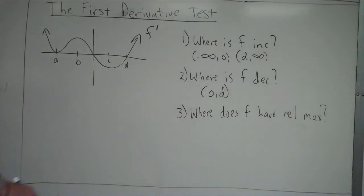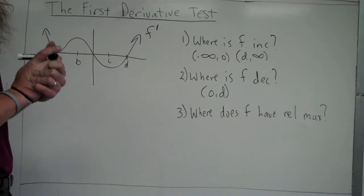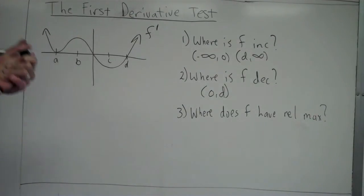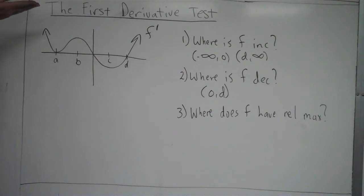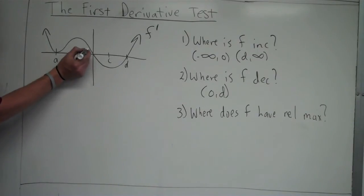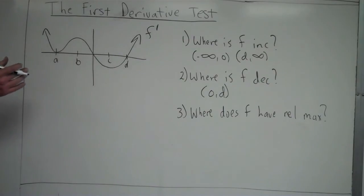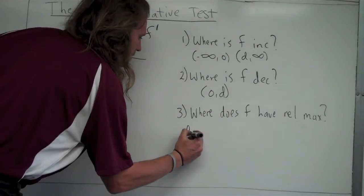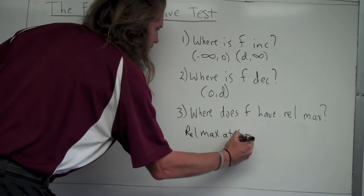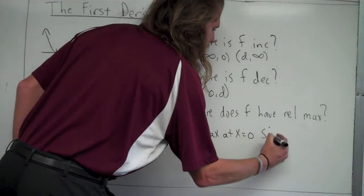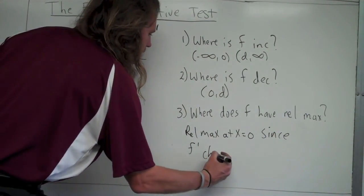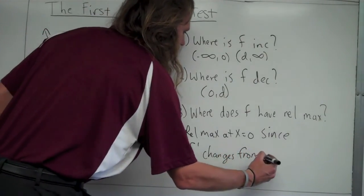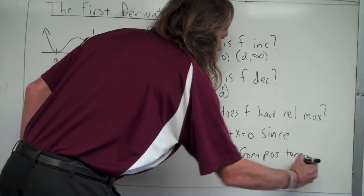Where does f have a relative max? f has a relative max when f prime changes from positive to negative. What we're looking for is any place where the graph of f prime goes from a positive y-value to a negative y-value — from above the x-axis to below the x-axis. That happens right here at zero. To the left of zero, f prime is positive; to the right of zero, f prime is negative. I'm not looking at the slopes of this graph — I'm looking at the actual values of it. So there is a relative max at x equals zero.